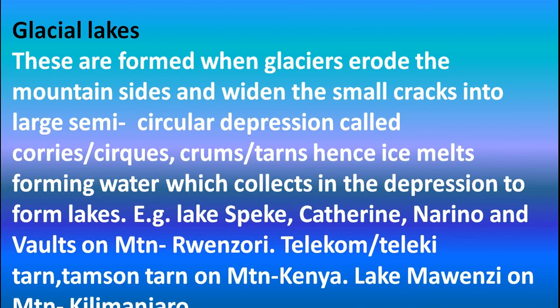We move on to another type — glacial lakes. These are formed when glaciers erode the mountain sides and widen small cracks into large semi-circular depressions called cirques, corries, or tarns. The ice then melts to form water, which collects into the depression, forming lakes. A glacier is a sheet of ice that moves down the slope, eroding as it goes. We have quite a number on Mount Rwenzori, because it is a snowcapped mountain, and also on Kilimanjaro and Kenya.